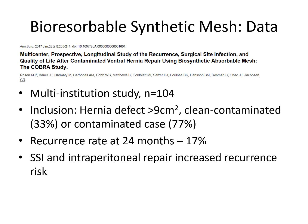Inclusion criteria included a hernia defect size greater than nine centimeters squared, and clean-contaminated or contaminated cases — important because we're not talking about clean cases here. They assessed recurrence rate at 24 months, which was approximately 17%. SSI and intraperitoneal repair increased recurrence risk, so it's unclear whether the higher recurrence was due to hernia type, choice of repair, or mesh selection.